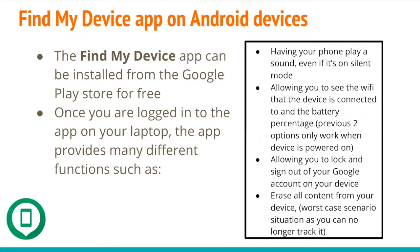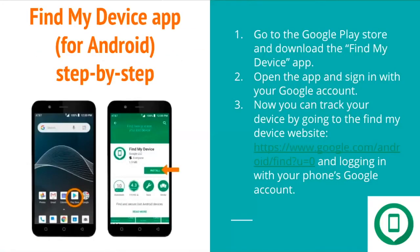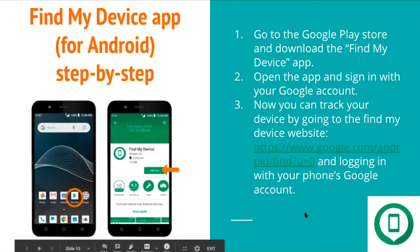The Find My Device app for Android devices can be installed from the Google Play Store for free. Once you are logged into the app on your laptop, it provides many functions such as having your phone play a sound even if it's on silent mode, allowing you to see the Wi-Fi the device is connected to and the battery percentage, allowing you to lock and sign out of your Google account on your device, and you can erase all of your content in a worst-case scenario. To install, go to the Google Play Store and download the Find My Device app. Then open the app and sign in with your Google account. You can track your device by going to the Find My Device website and logging in with your Google account.